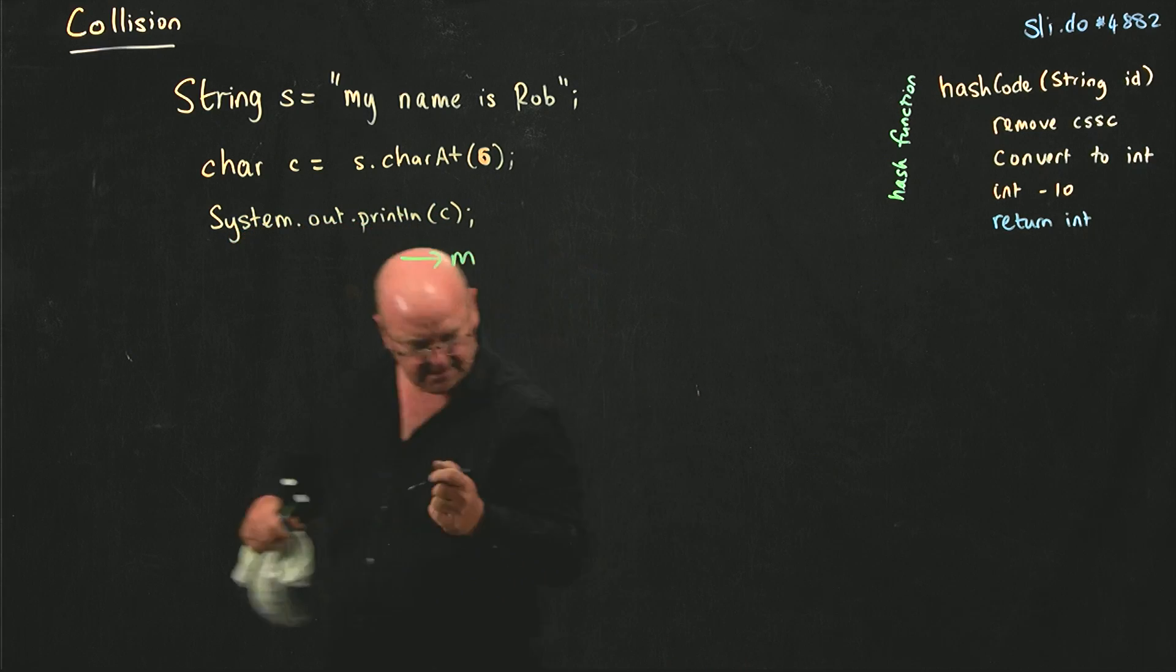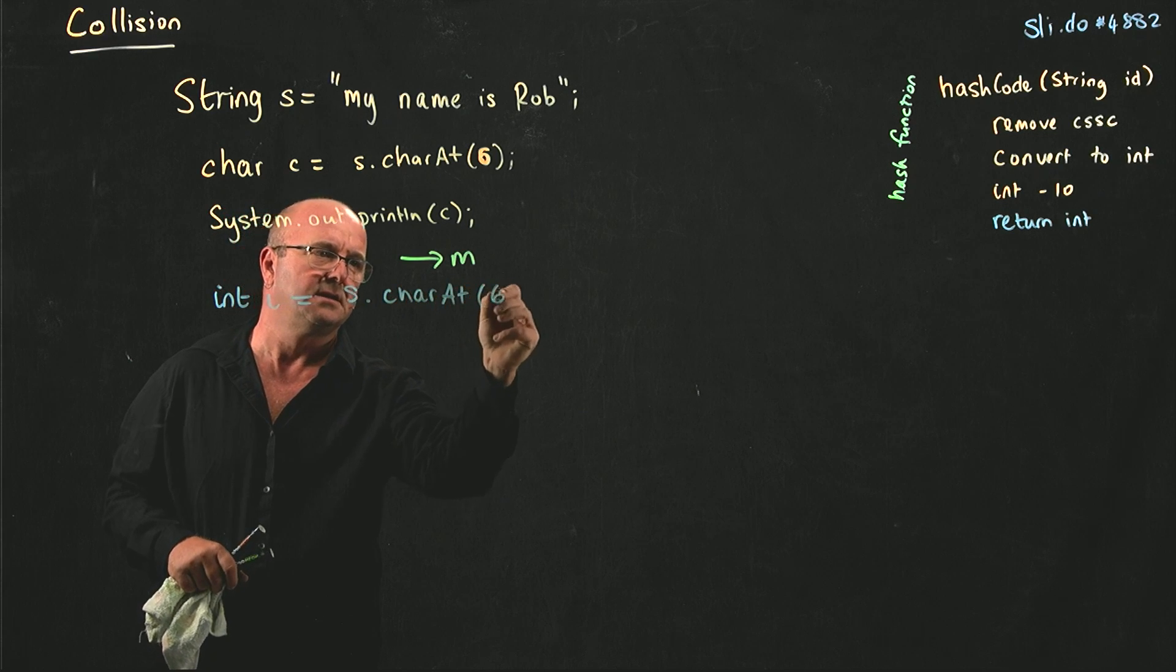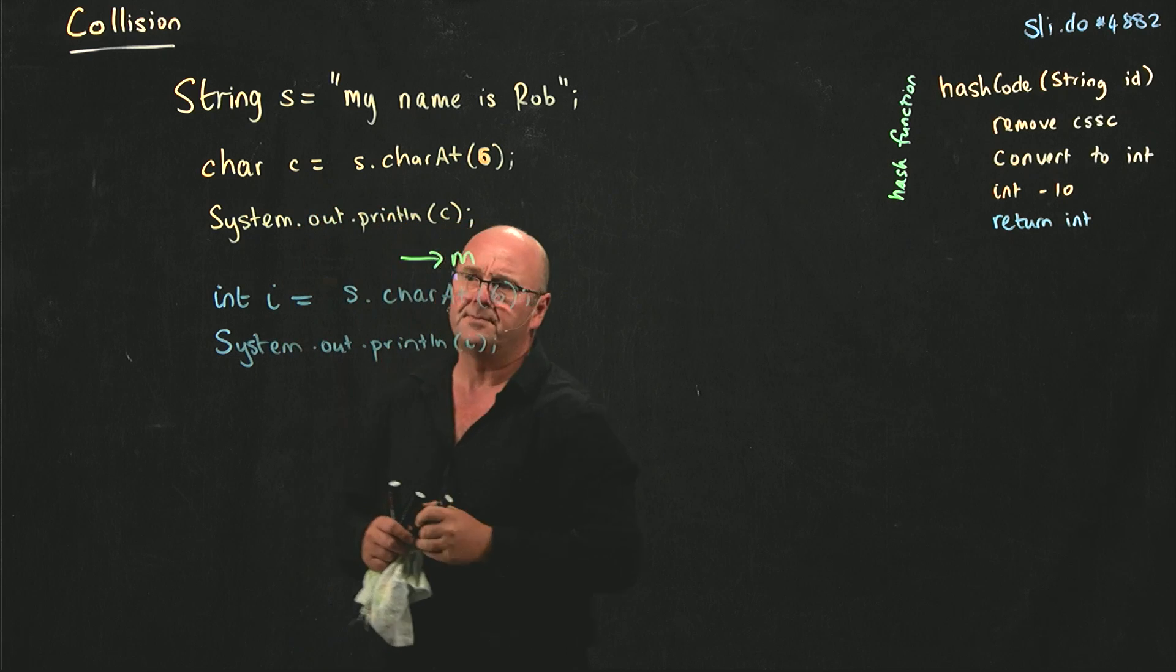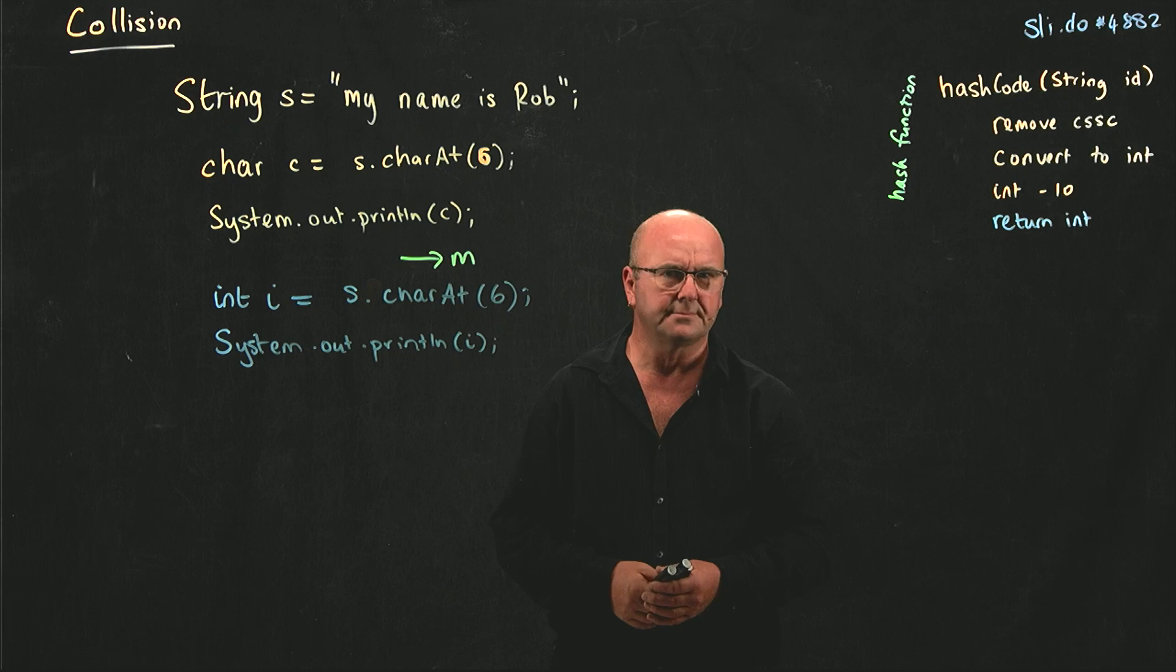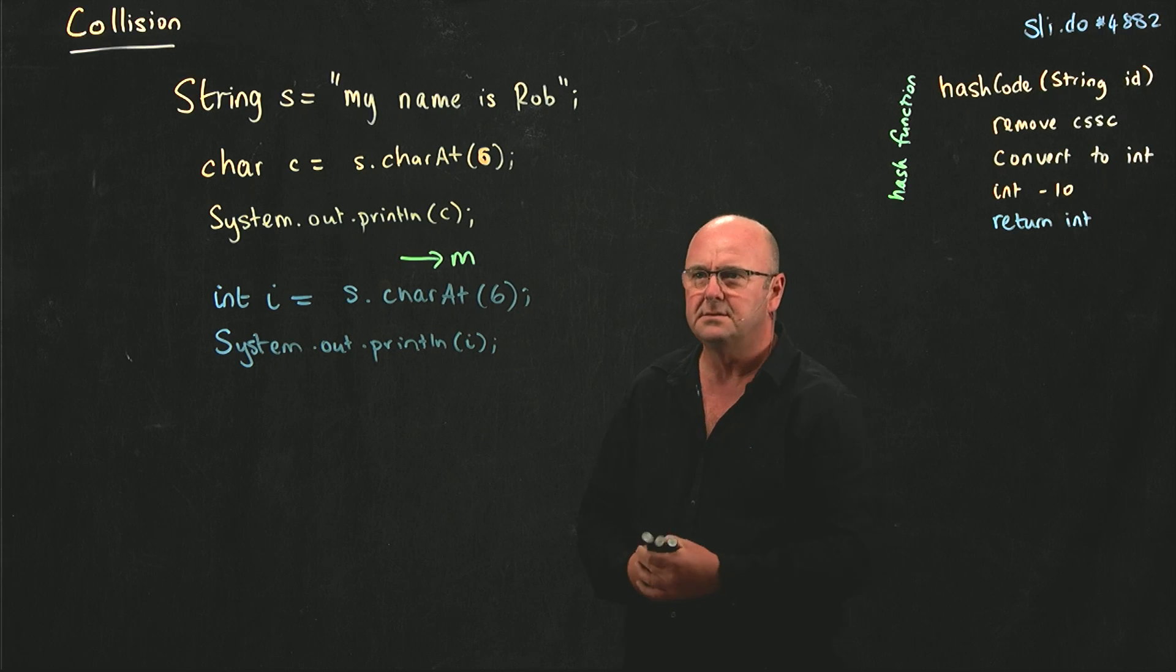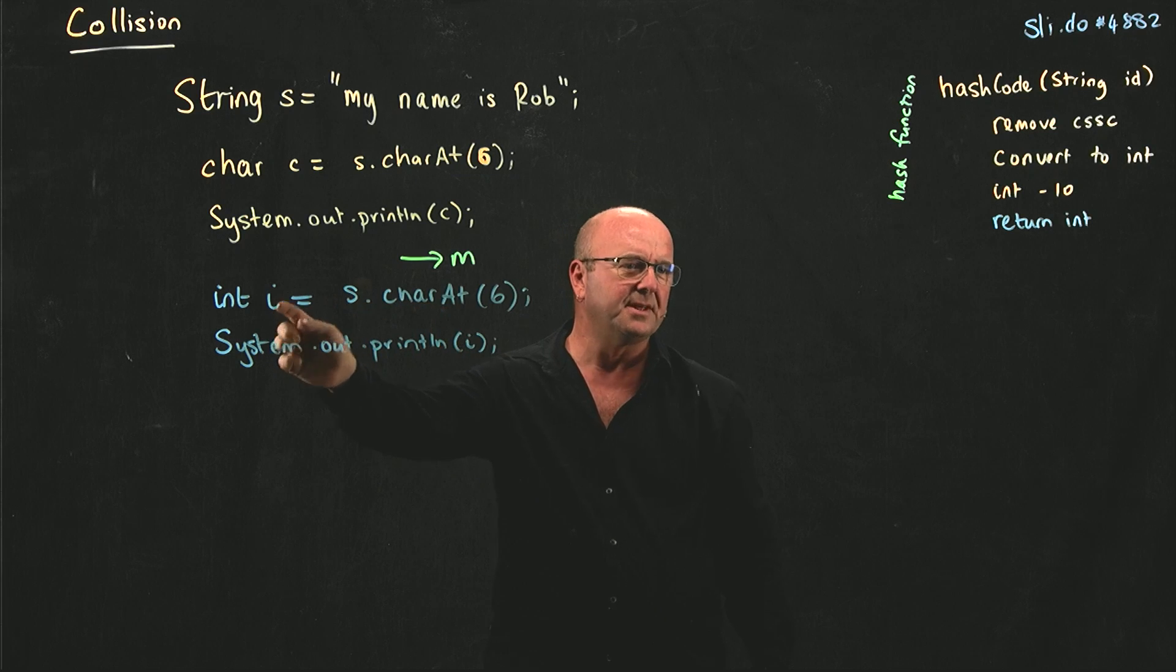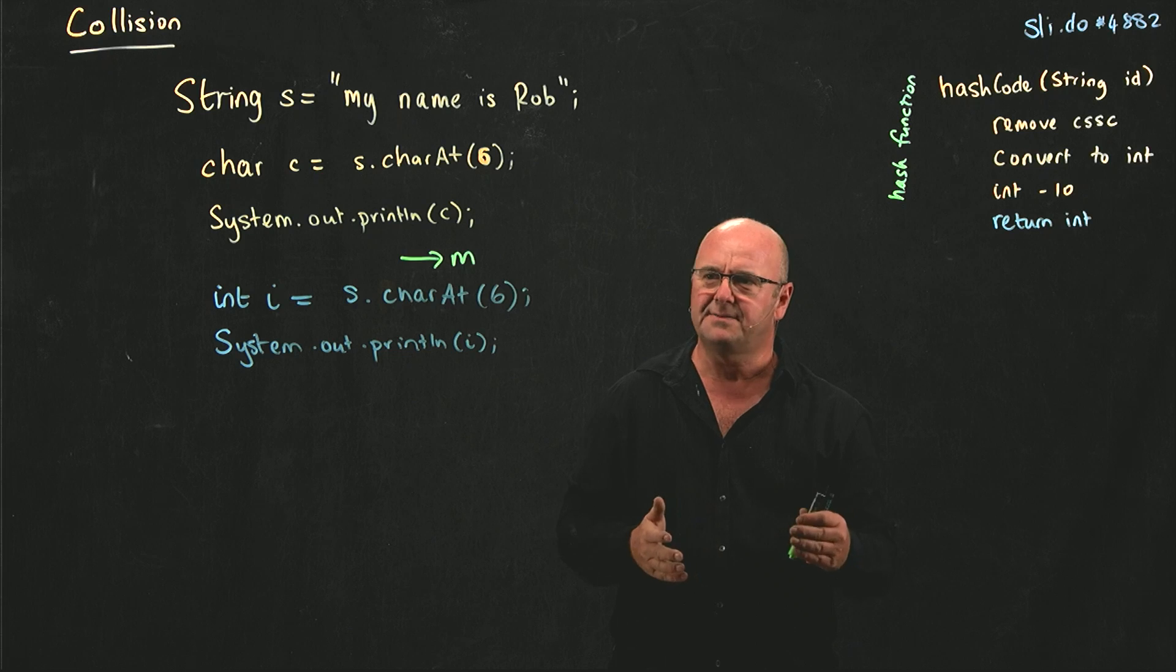What happens if I say int i = s.charAt(6)? Now I try and print out this integer. Is that even going to compile? It is going to compile because this method is overloaded, and there's a version of this method that returns an integer. So what integer would you return associated with the character 'm'? The ASCII value. Brilliant.